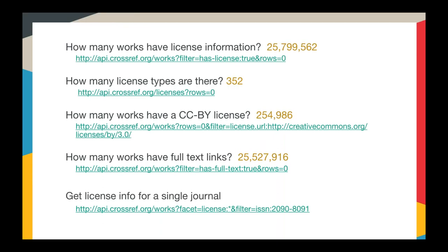You can use this API to filter by which records have ORCIDs, which records have status updates like errata or retractions, which records have funding information, and which records reflect research funded by a given funding organization. You can sort by publication dates, and you can see which items have text and data mining licenses. We have around 25 million items with licensed data supply, 352 types of licenses registered with us, and 25 million plus items that have full text links that can be used for text and data mining. You can also limit queries to a single journal, book, or conference proceeding.